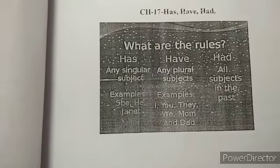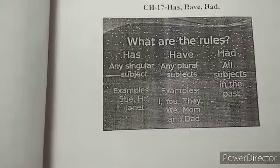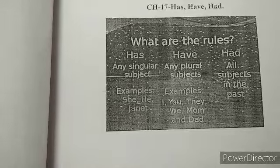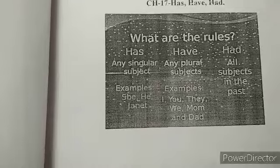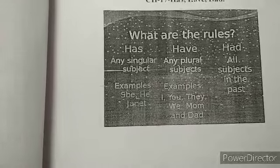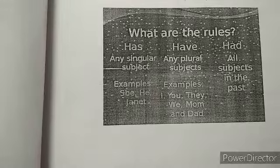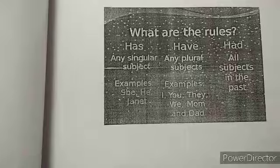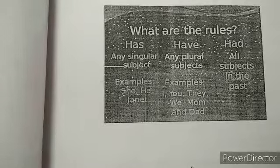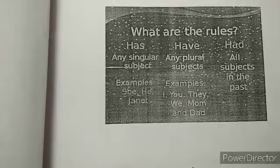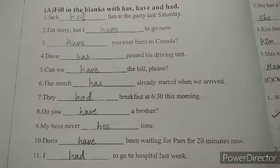Hey little learners, welcome everyone for another part of Grammar PA2 revision lectures. Chapter number 17: has, have, and had. What are the rules for has, have, and had? I had already taught you: for any singular subject we use 'has', any plural subject we use 'have', and all subjects in the past we use 'had'. Now let's try to do the exercise portion. Please turn to page number 9.